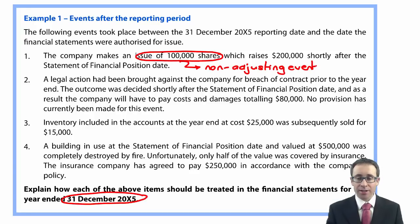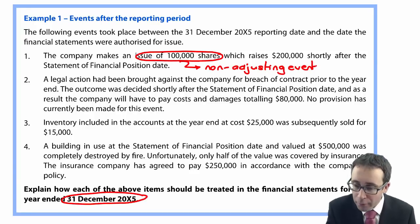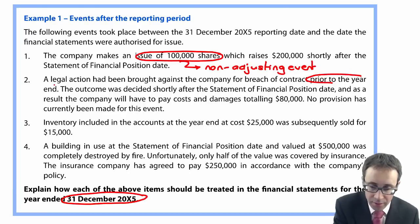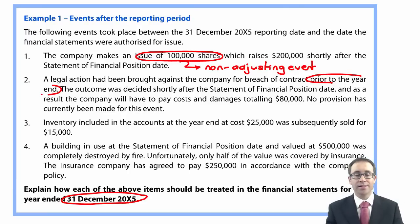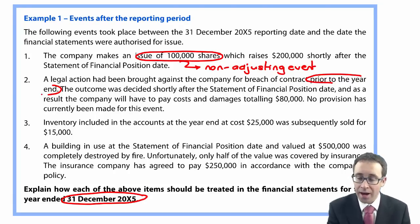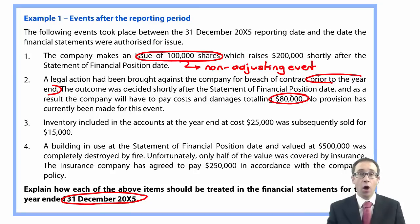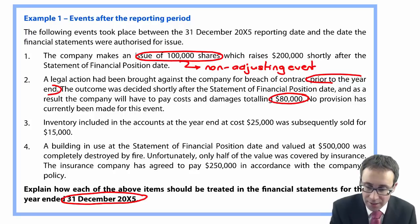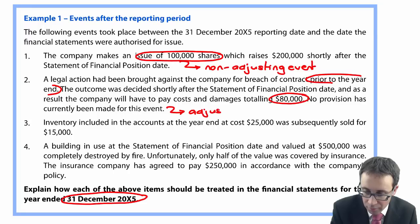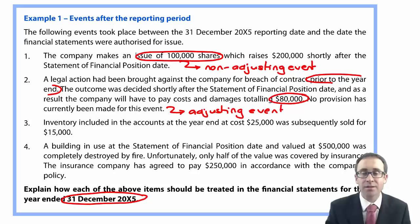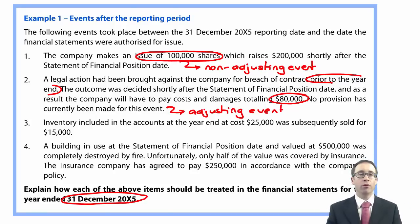Number two: a legal action has been brought against the company for breach of contract prior to year end, so there was an outstanding court case at year end. Shortly after the SFP date, it has been agreed the company will have to pay costs and damages totalling $80,000. No provision has currently been made, but this gives us additional information about a condition that existed at the reporting date. So that will therefore be an adjusting event — we will record a provision at the reporting date.